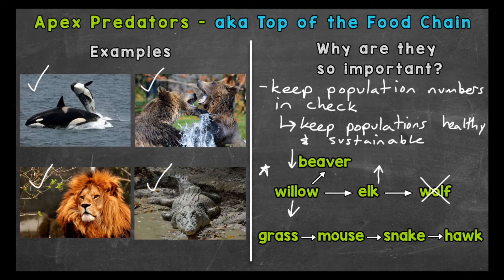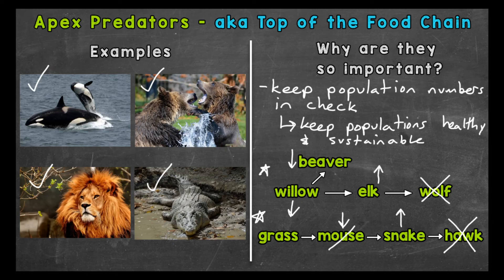Apex predators also keep small carnivore populations in check. Take a look at this basic food chain: grass, a mouse, a snake, and a hawk. Let's eliminate the hawk. Without that predator, the snake population would increase. In turn, the mouse population would decrease due to the increase in snakes — there's nothing to keep the snake population in check. If the snake population got too out of control, it could crash the mouse population, which would then crash the snake population. Everything is connected and in balance, and apex predators help keep it that way.